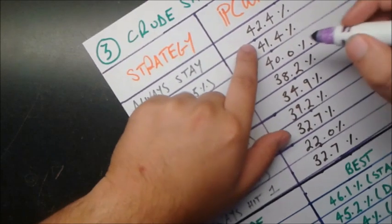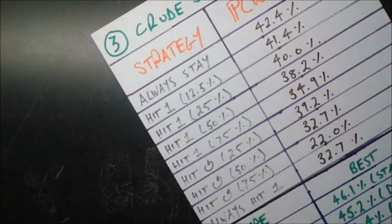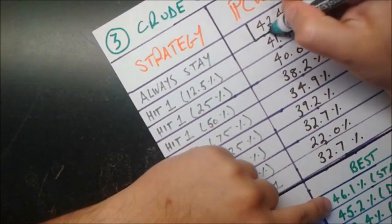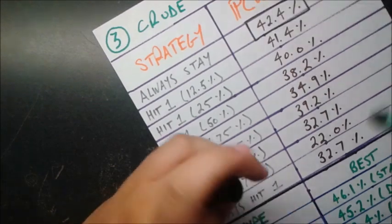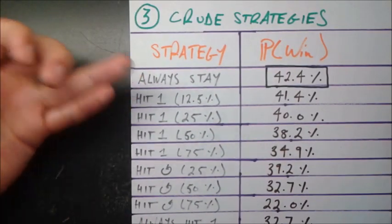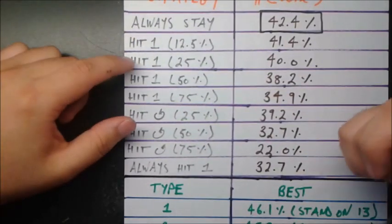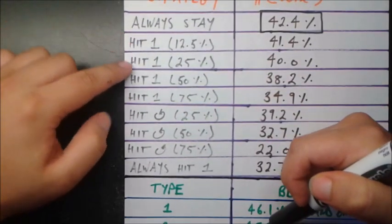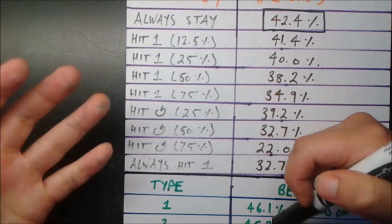So it turns out that actually this is the highest one. Let me do this in black. This is actually the highest one out of all of these crude strategies, which just shows you that this is the best you can do if you're just playing crudely. But anyway, let's look at the other ones.